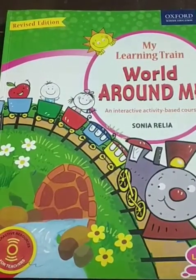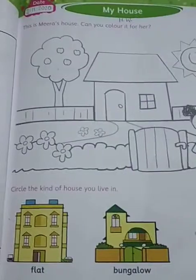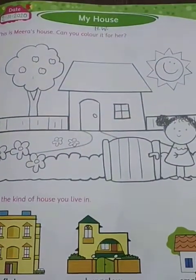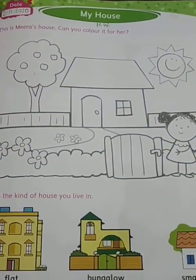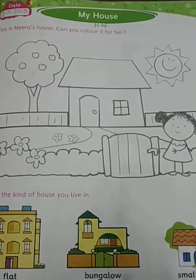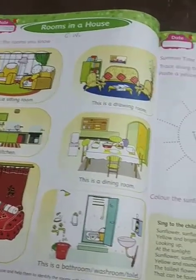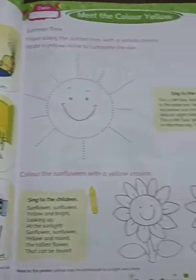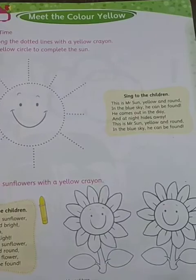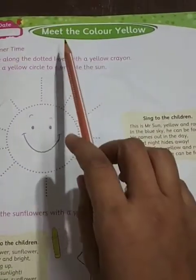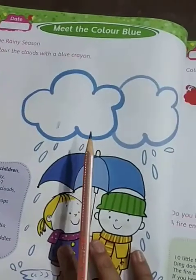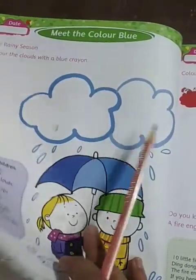Now open your book. In the first part of today's video we have learned about the topic 'My House' and all the rooms in a house. In this part we are going to do some new topics related to colors. The first topic is 'Make the Color Yellow' and the second one is 'Make the Color Blue.' Let's start with yellow color.